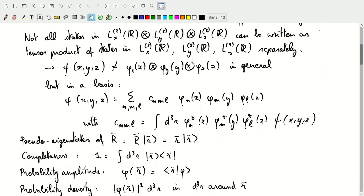In general, a state ψ or a wave function in three dimensions ψ that depends on X, Y, and Z will not be able to be written as a separable function as a state that is a tensor product of an X-dependent part, a tensor product of a Y-dependent part with a Z-dependent part.